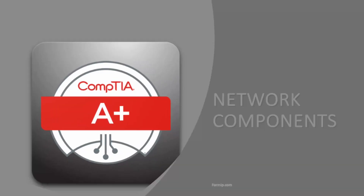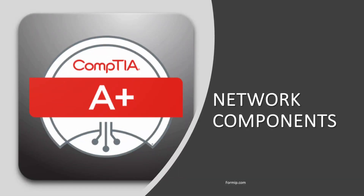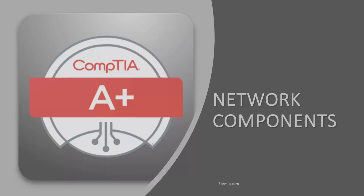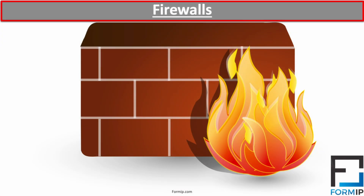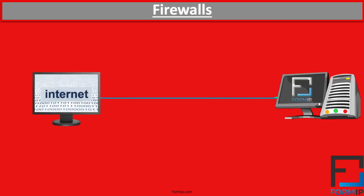In this course, we'll look at different components of the network. Let's start with the famous firewall. A firewall can be either software or hardware. It is a system designed to prevent unauthorized access from entering a private network, filtering data that comes from the internet.